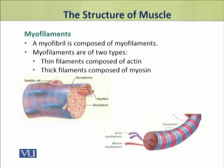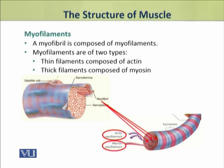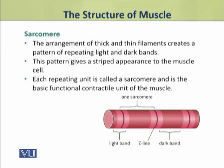Dear students, every myofibril is itself composed of myofilaments. हर myofibril के अंदर मزید چھوٹے لمبے دھاگے کی طرح کے myofilaments پائے جاتے ہیں۔ These myofilaments are of two types: thin filaments, which are made up of protein actin, and thick filaments, which are composed of protein myosin.